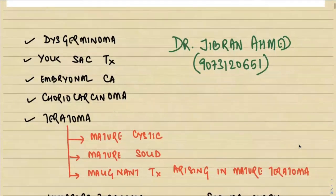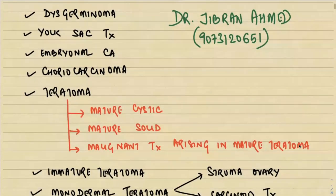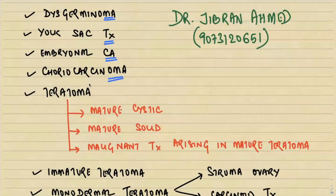What are the germ cell tumors? This is a long answer question — they will ask you to discuss and describe germ cell tumors of the ovary. The classification includes: dysgerminoma, yolk sac tumor, embryonal carcinoma, choriocarcinoma, and — very importantly — teratoma.